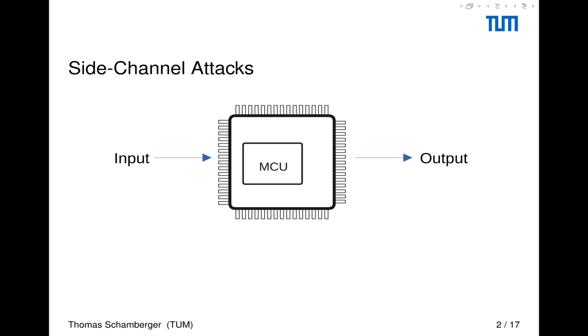I will first introduce you to side channel attacks. In the black box model, we as an attacker can only observe the input and the output of an algorithm executed on a device. Nevertheless, an attacker can also observe a so-called side channel of the device, which means an attacker can observe the execution time of the algorithm running on a device or the power consumption of the device. You can do this either by directly observing the power consumption or capturing the electromagnetic emanation of the device. And if these informations are dependent on the secret processed in the device, an attack can be mounted.